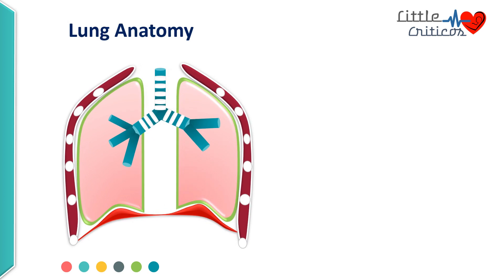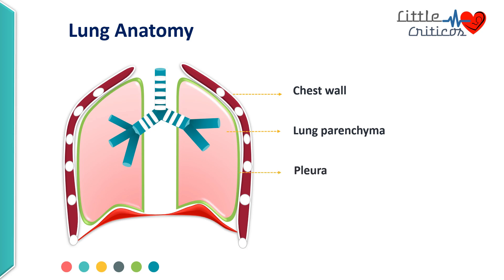There are four key anatomical structures that we need to understand before we proceed: the chest wall that covers the lung, the lung parenchyma per se, the pleural space that is present between the chest wall and the lung parenchyma, and the diaphragm.